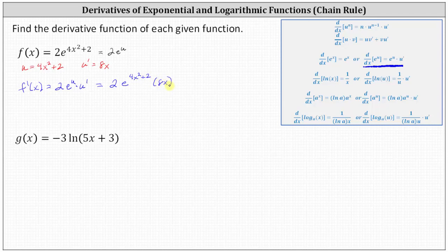Let's go ahead and multiply two and eight x, which is 16 x, and write f prime of x as 16 x times e to the power of the sum of four x squared and two. After doing this a while, you probably don't have to show this much work, but when first learning the chain rule, it's often helpful to always find u and u prime and write them down.